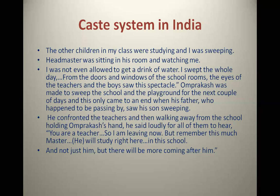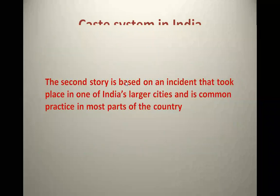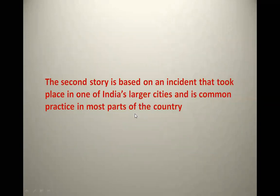So in this case, you have seen what kind of untouchability is prevailing in India. Some children are inclined to study in school while some are discriminated against even in elementary education. This story shows the caste system in India. The second story is based on an incident that took place in one of India's larger cities and is common practice in most parts of the country. The first story belongs to rural areas and the second belongs to urban areas — inequalities are also prevailing in larger cities of India.